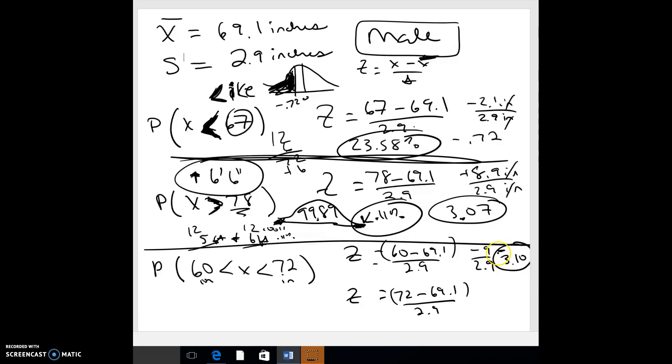And then this one, I'm going to subtract, so 72 minus... oh, you know what, I messed up there. Sorry, I forgot the decimal. 60 minus 69.1, so that should be negative 9.1 divided by 2.9. So that should be negative 3.14, so I need to fix that. And then over here we're going to take 72 minus 69.1 and divide by 2.9. That's 2.9 divided by 2.9, which gives me a z-score of actually 1.